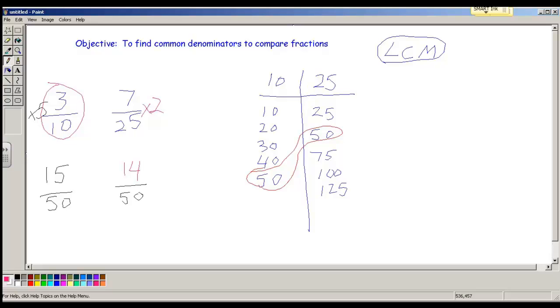Make a list of the multiples. And then find the least common multiple. Come back, write your new denominator for both numbers. And then ask yourself, what did you do to the denominator to get your new denominator that is an equal denominator over here, a common denominator? Multiply by that number on your numerator, and you have your new equivalent fraction. Let's try another one.